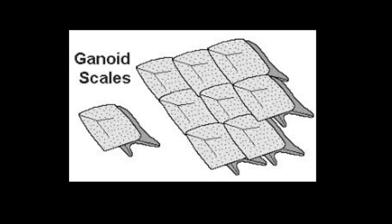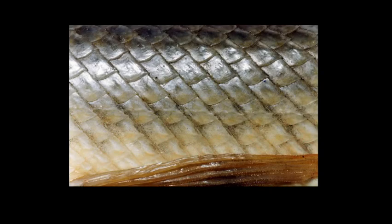This picture shows the arrangement of ganoid scale over the skin of fishes. As you can see, these appear like tiles present on the floor.